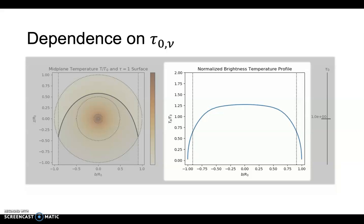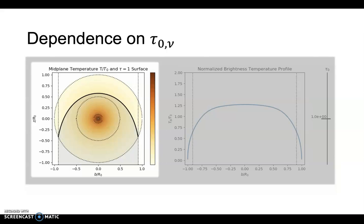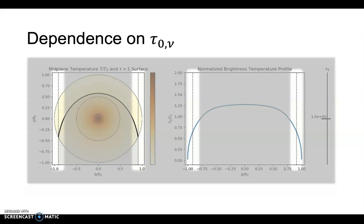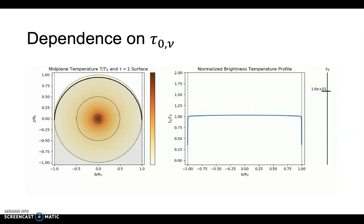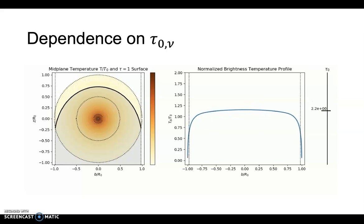Remember that the brightness temperature is roughly the temperature at the tau equals 1 surface. So to the left, I'm showing the temperature in the mid-plane of the disk relative to t-naught. The black solid line is the tau equals 1 surface, seen from the observer in the positive z direction. The tau equals 1 surface effectively obscures the material behind it, represented by the gray region. The vertical dotted lines are the locations in the major axis where the optical depth is 1, which separates the optically thin and optically thick regions. As we change the characteristic optical depth, the tau equals 1 surface shifts its location.